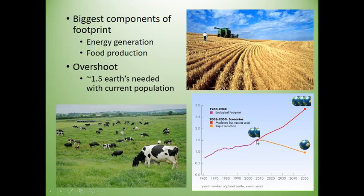So the question is, now that we're at 2020, have we started to flatten this curve? Have we made improvements? And essentially, no, we haven't. We're continuing on this upward trend. Right now we're seeing that we need about one and a half Earths for the current population, and our population is continuing to grow.